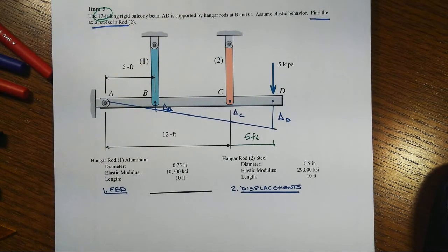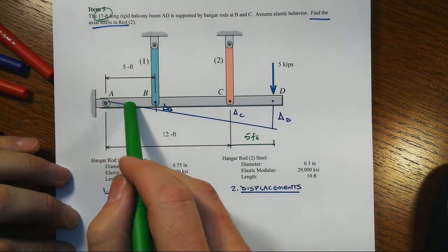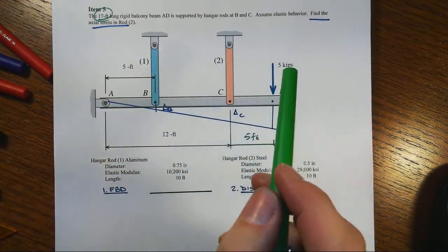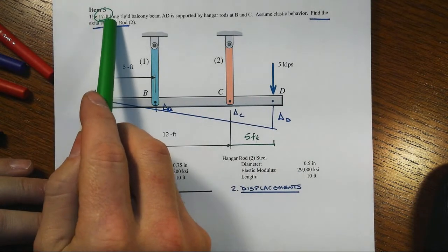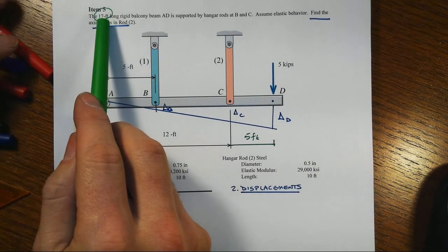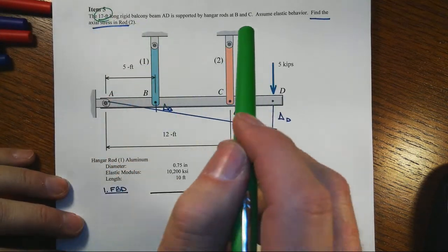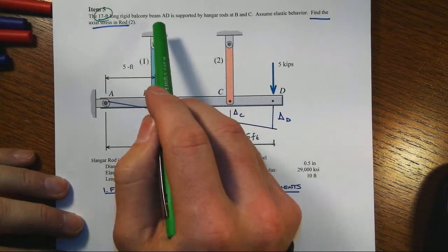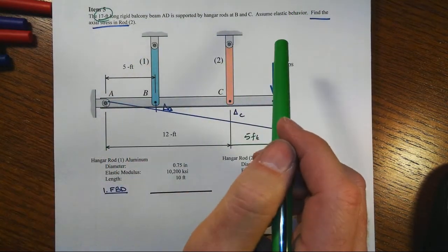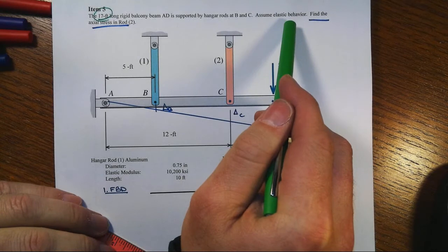In this fifth and final item on the exam, we've got a rigid bar ABCD, two hangers, a 5-kip load, and the total length of this rigid bar, which is representing a balcony beam, is 17 feet long. And we're asked to find the axial stress in rod two. We're going to assume elastic behavior.